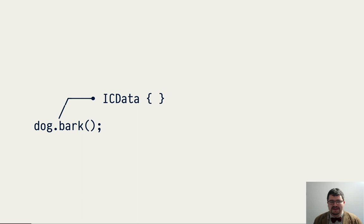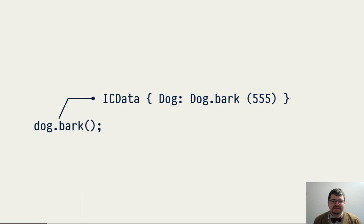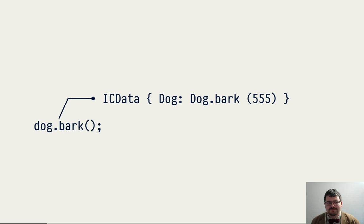Looking at the call site and inline cache: it starts empty, and as execution happens you reach the call site, for example with an instance of Dog — maybe 555 times. This count is recorded in the inline cache alongside the mapping between receiver classes and method resolution results. The reason we record counts is that it allows us to perform polymorphic inlining and sort possibilities based on frequency. When the surrounding function becomes hot, the optimizing compiler performs specialization based on information collected by inline caches.